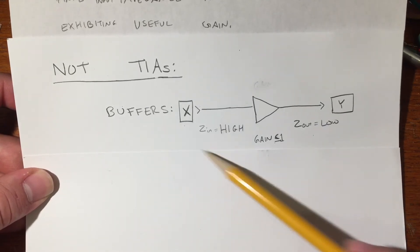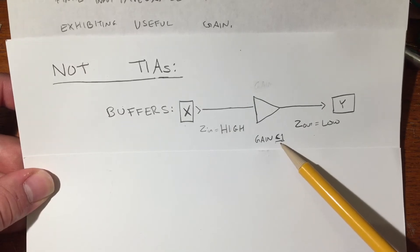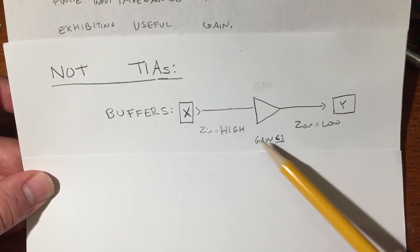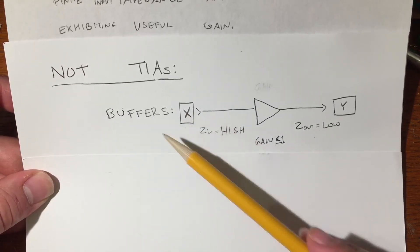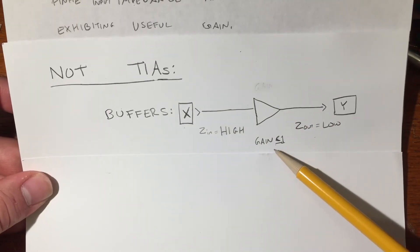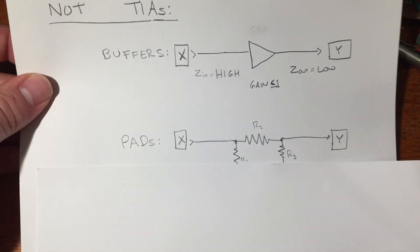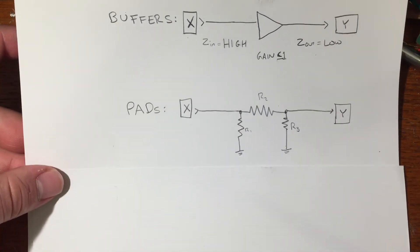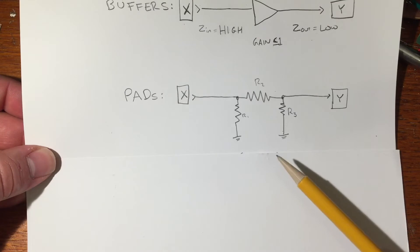But a buffer, sort of by definition, is something with unity gain, maybe a little less than unity gain, something that's meant to help the earlier parts of your circuitry drive the later parts. If it had a higher gain than one, we'd call it an amplifier.